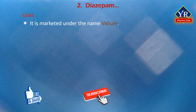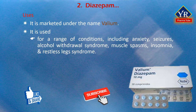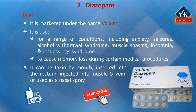Diazepam is marketed under the trade name Valium. It is used as an anxiolytic and is commonly used to treat a range of conditions including anxiety, seizures, alcohol withdrawal syndrome, muscle spasms, insomnia and restless legs syndrome. It may also be used to cause memory loss during certain medical procedures. It can be taken by mouth, inserted into the rectum, injected into muscle, injected into a vein, or used as a nasal spray.